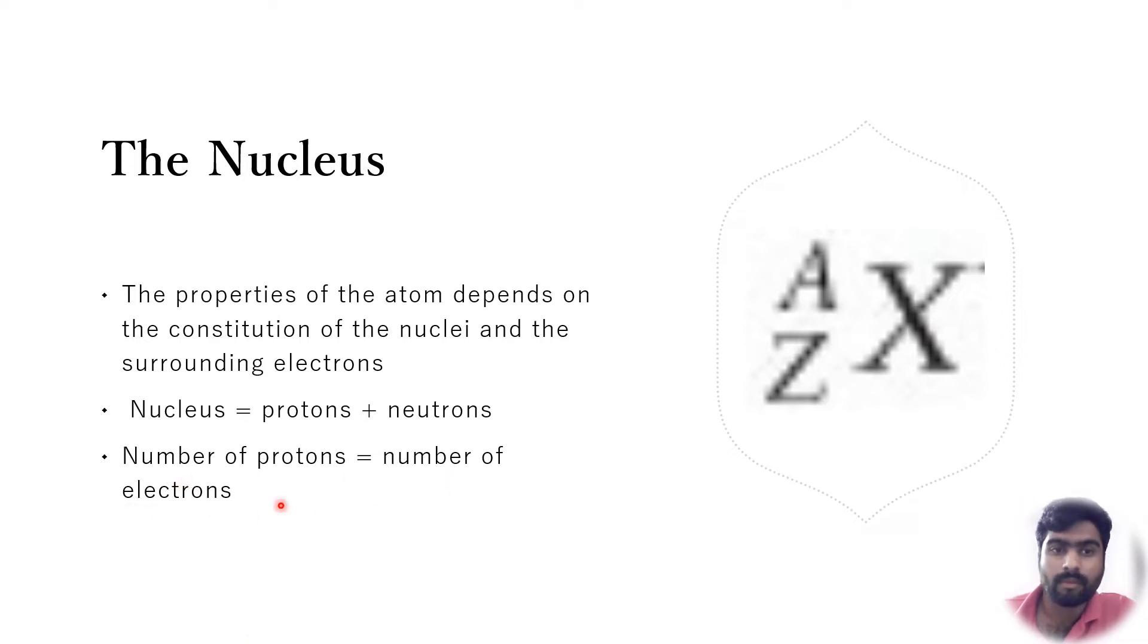An atom is completely specified by the formula subscript Z, superscript A, X. If you replace X with the chemical symbol, let's say carbon C, or cobalt Co, or magnesium Mg, or lead Pb.